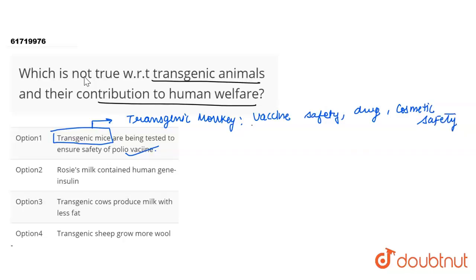So, this is the first option. The second option is that the Rosy Cow milk contains human genes for insulin — this is wrong. This is not human insulin in this milk.